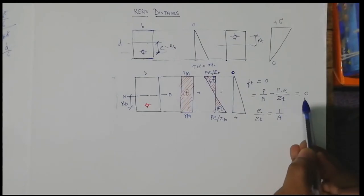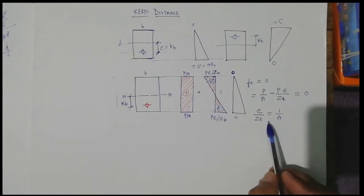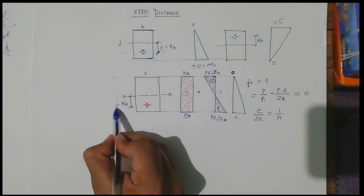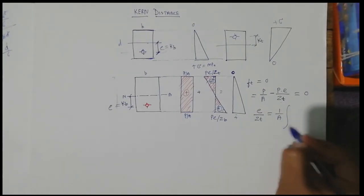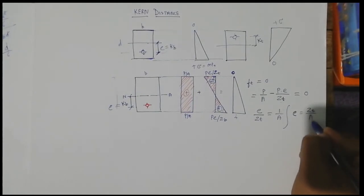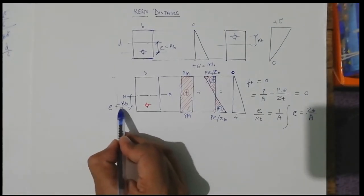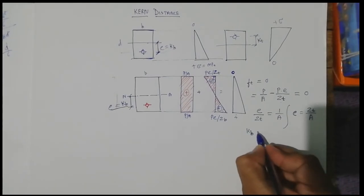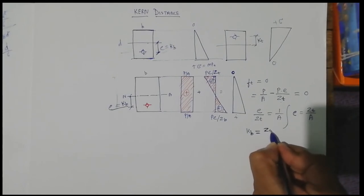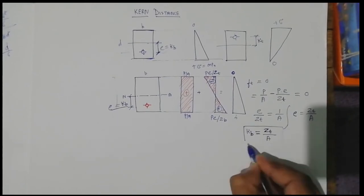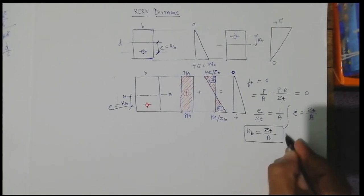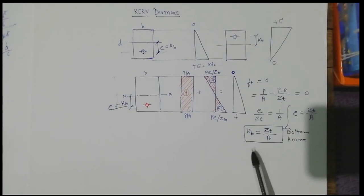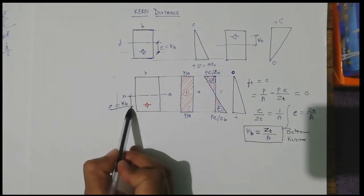Writing the equation for top stresses: if FT equals zero, then P/A minus P·E/ZT equals zero. From this, E/ZT equals 1/A, so E equals ZT/A. Since E here is nothing but KB, we can conclude that the kern bottom distance KB equals ZT divided by A, where ZT is the top section modulus and A is the cross-sectional area.